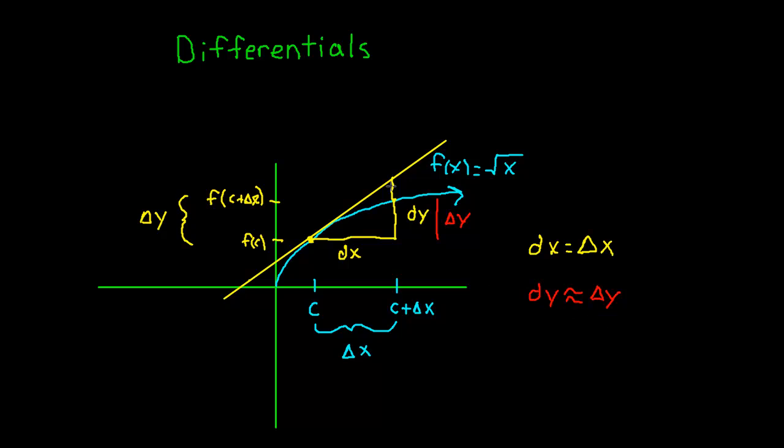dy is just a really good approximation of delta y. Okay, it's not equal to it because we have this little space right here where they're different. dy is all the way up to the tangent line. Delta y is just this distance right here.